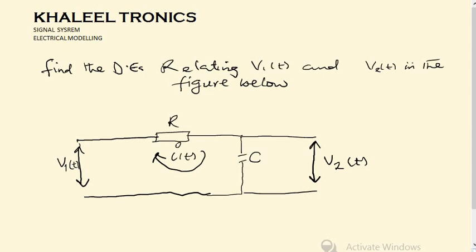V1 is here, this is the resistor, and here is the capacitor. This is the output voltage V2. We are going to find the differential equation.